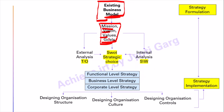We divide them into three parts. One is external analysis and one is internal analysis. External analysis gives us threats and opportunities, while internal analysis gives us our strengths and weaknesses. So we have threats, opportunities, strengths, and weaknesses — this is our SWOT analysis, leading to strategic choice.